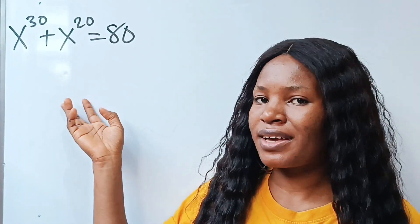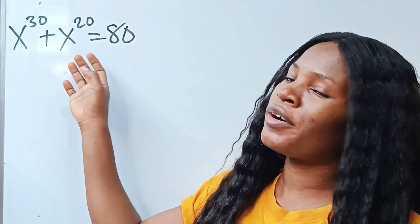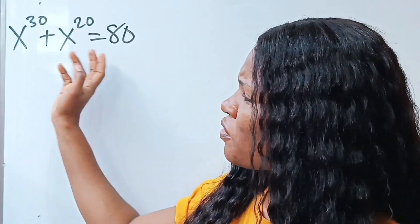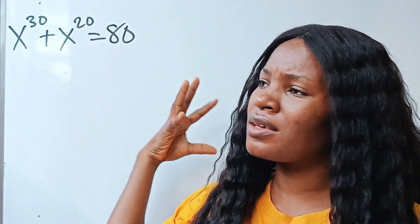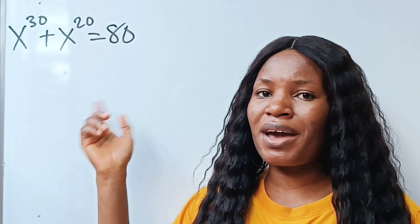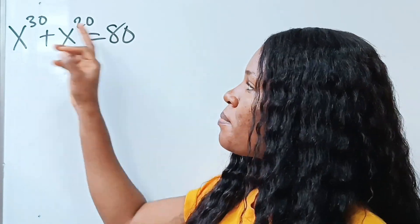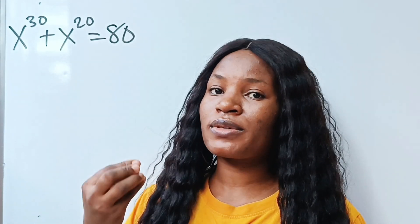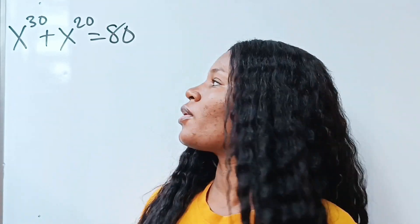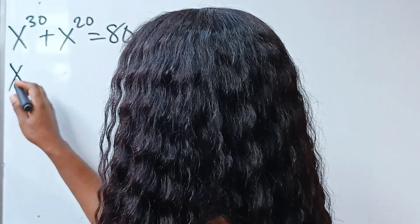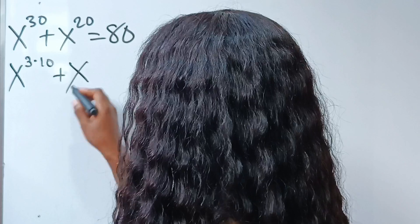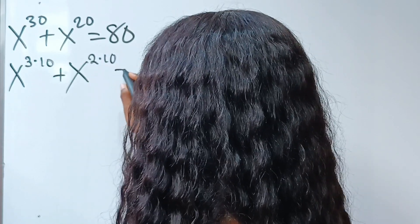We are asking for the real value of x. Welcome to my channel — let's get straight to the point. First of all, we need to factorize the powers. That is the first thing that came to my mind when I first saw this question. My 30 and my 20 have something in common, and that is 10. So let me use that and factorize first. I will write x to the power of 3 multiplied by 10, plus x to the power of 2 multiplied by 10.